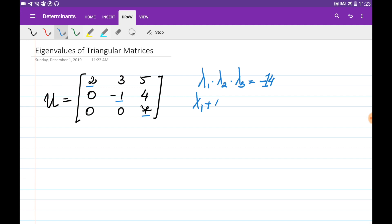And the sum of its eigenvalues is equal to the trace of this matrix, which is the sum of its diagonal entries, which is going to be equal to 8. So from here, we could guess that the eigenvalues of this matrix are 2, -1, and 7, because they satisfy these two equations.